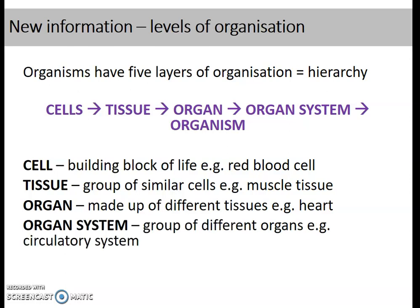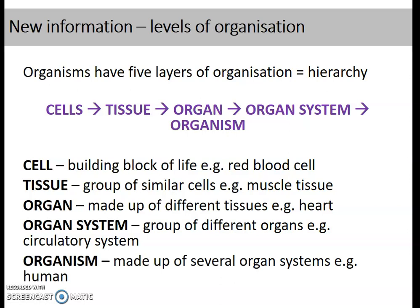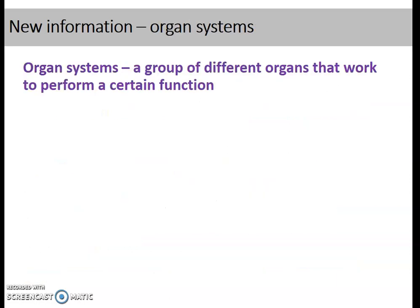An organ system is a group of different organs that work together to perform a certain function. For example, the circulatory system includes your heart, blood vessels, and lots of different organs. An organism is made up of several organ systems — for example, a human is made up of the endocrine system, nervous system, circulatory system, respiratory system, and many more.